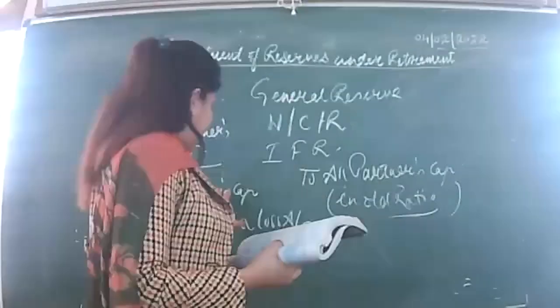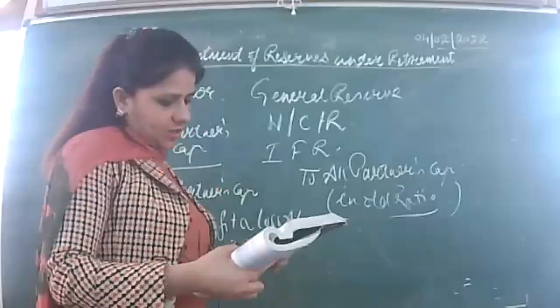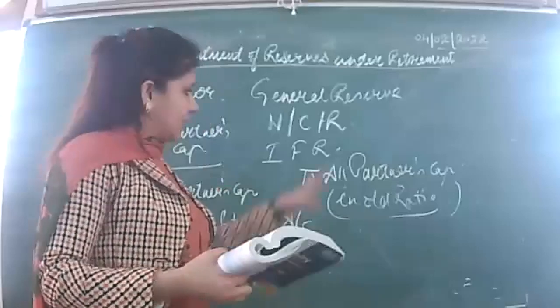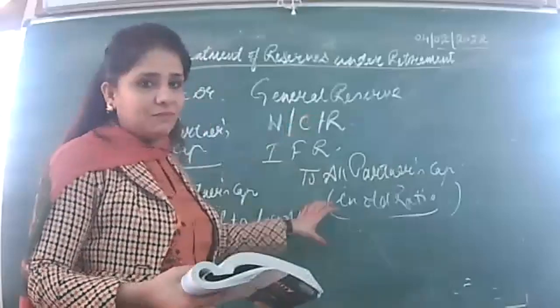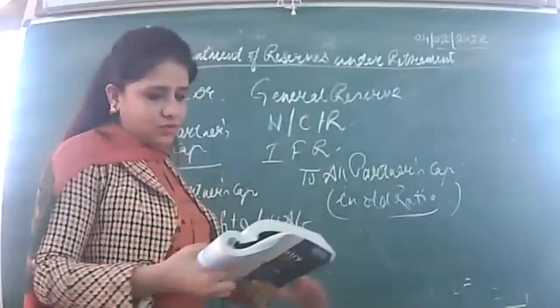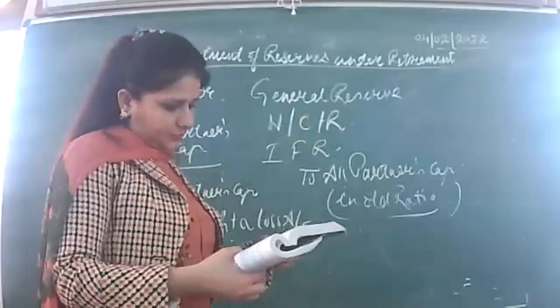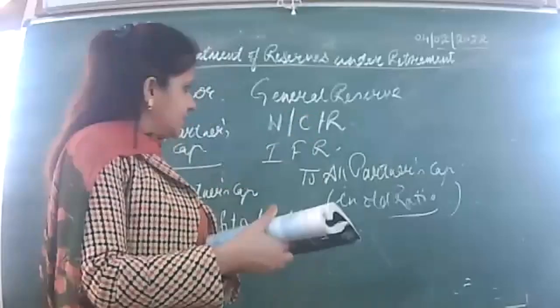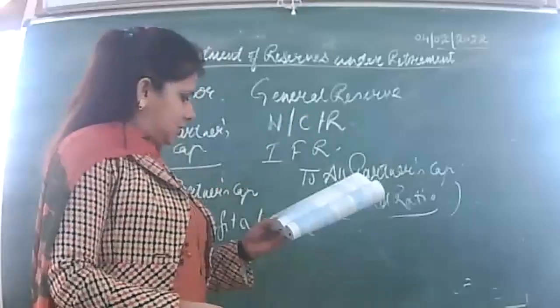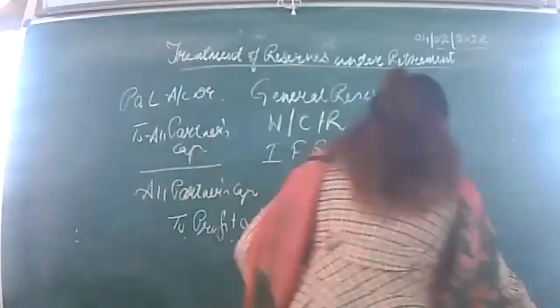The entry for advertisement suspense: all partners' capital accounts debited to advertisement suspense. If the capitals are fixed, the entry will be passed with the help of current accounts. Let's see example 20 relating to it — very easy.